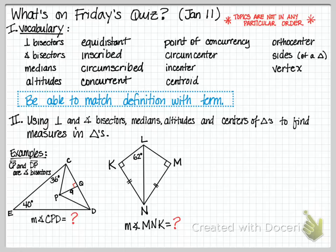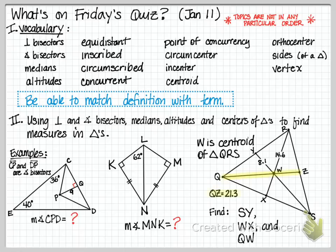The third example is this triangle, triangle QRS, and I have these segments that are all concurrent at point W, and it says W is the centroid of triangle QRS, which means those segments are something in particular. We're given some measurements of these things. We've got that RW is 14.6, it's marked in the diagram.